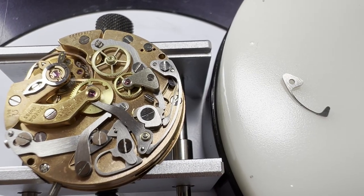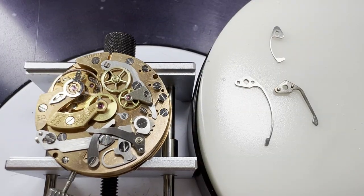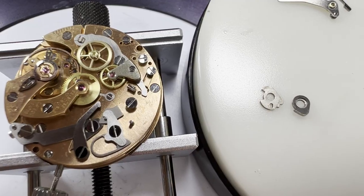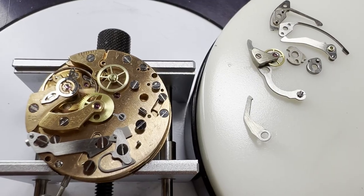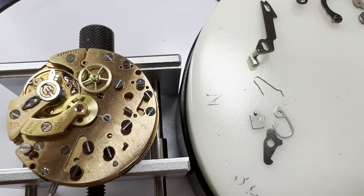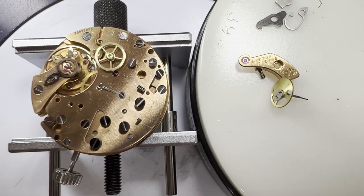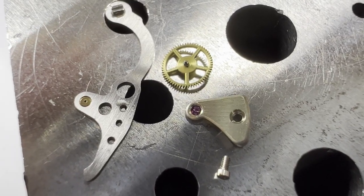First, the chronograph works are removed, starting with the coupling clutch spring, then the return hammer spring, cam spring, return hammer, the cam, coupling clutch, intermediate operating lever, operating lever, operating lever spring works, intermediate operating lever spring, chronograph seconds cock, the chronograph seconds wheel, then the coupling clutch is disassembled.